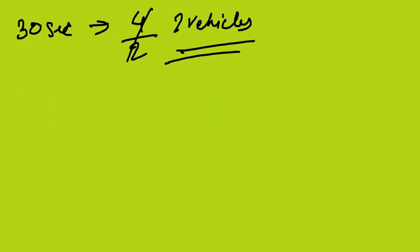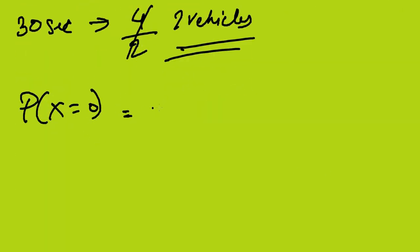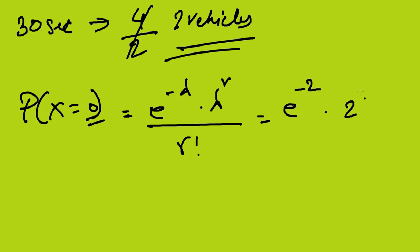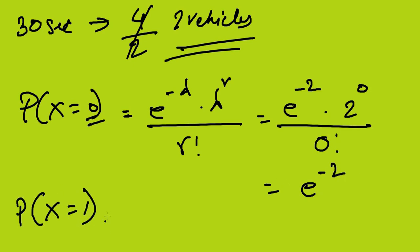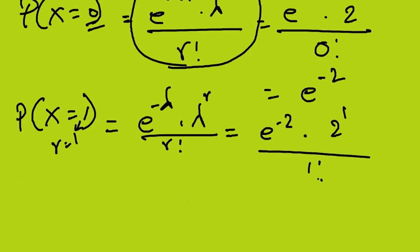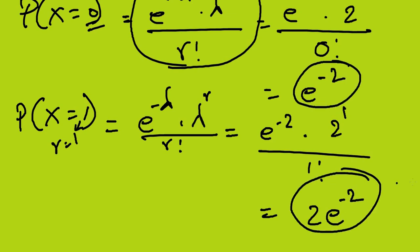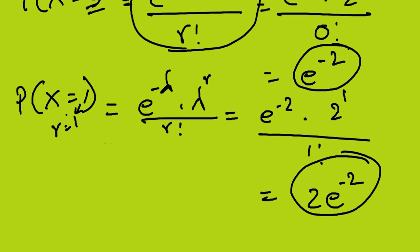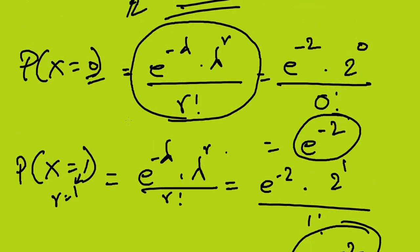With lambda equals 2: P(X=0) = e^(-2) times 2^0 divided by 0! = e^(-2). P(X=1) = e^(-2) times 2^1 divided by 1! = 2·e^(-2). So P(X=0) = e^(-2) and P(X=1) = 2·e^(-2).